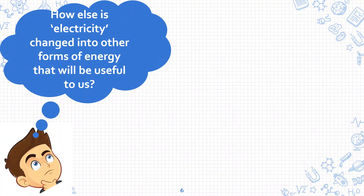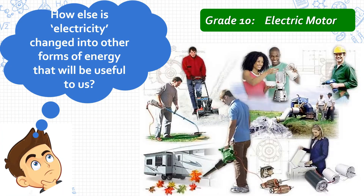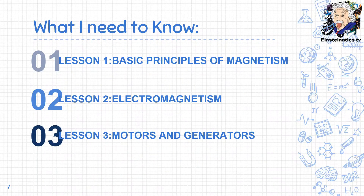Since grade 10 science also deals with electric motors, you are also going to answer how electricity is changed into other forms of energy useful to us. For today's video, we have three main topics: the first lesson is on basic principles of magnetism, second is on electromagnetism, and the third is on motors and generators.